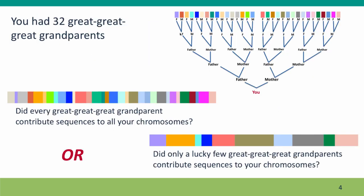There are two extremes of outcome. One possibility is that we still have segments of DNA from all 32 great-great-great-grandparents across all our chromosomes. They'd be quite short segments — but chromosomes are big, so they'd still be millions of base pairs long. The alternative is that the segments are much bigger, but we only have segments from a subset of our ancestors, and the rest were just unlucky — their segments didn't get passed on to us.